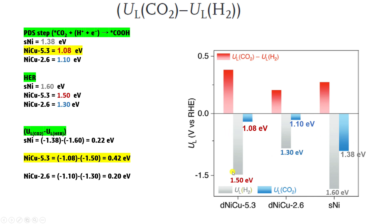The top plot is the selectivity potential profile. The potential determining step (PDS) for CO2RR is the first proton and electron addition step — the formation of COOH. The single nickel atom catalyst has a CO2RR limiting potential of 1.38 eV, as already stated. For HER, these are the limiting potentials for the hydrogen evolution reaction for each catalyst.